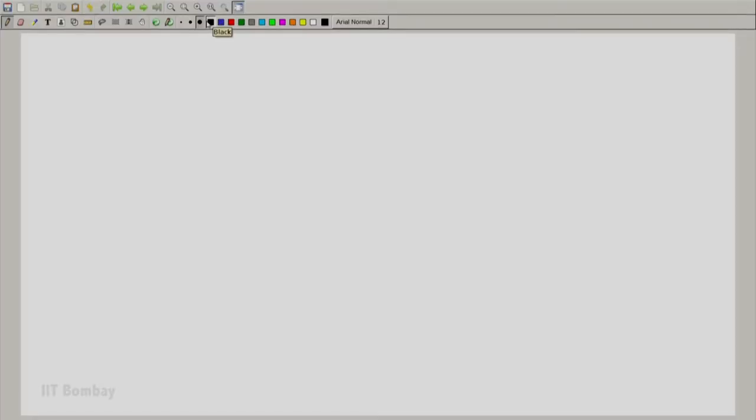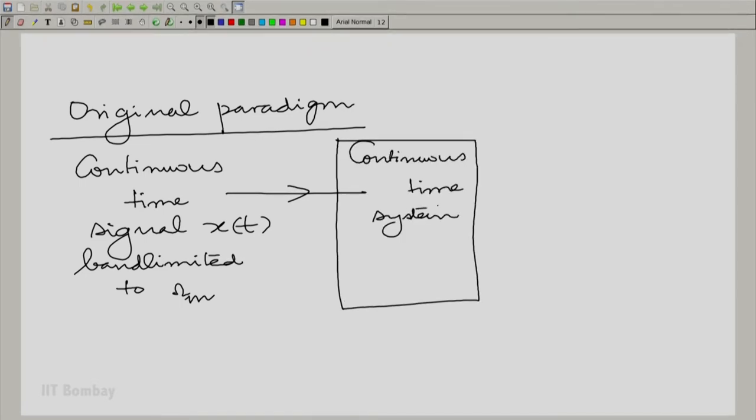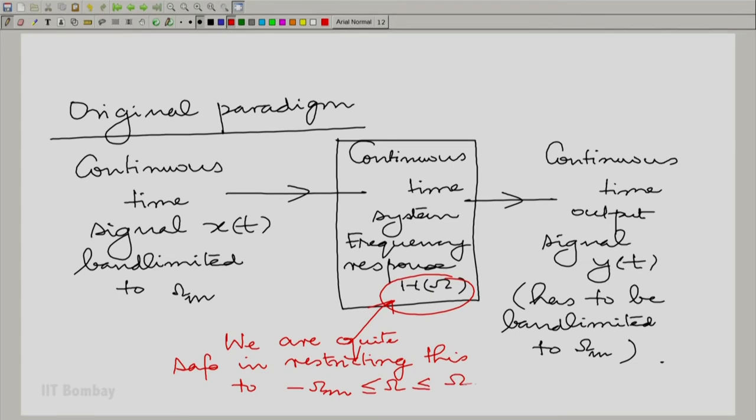What we are saying is you had this original paradigm. You wanted to process it with a continuous time system, and of course it is linear shift invariant, it has a frequency response. Its frequency response is capital H of omega and you wanted to produce a continuous time output signal. The output signal has to be band limited and we also saw that we are quite safe if we just restrict this to minus to plus omega m and that is what will give us the discrete system.